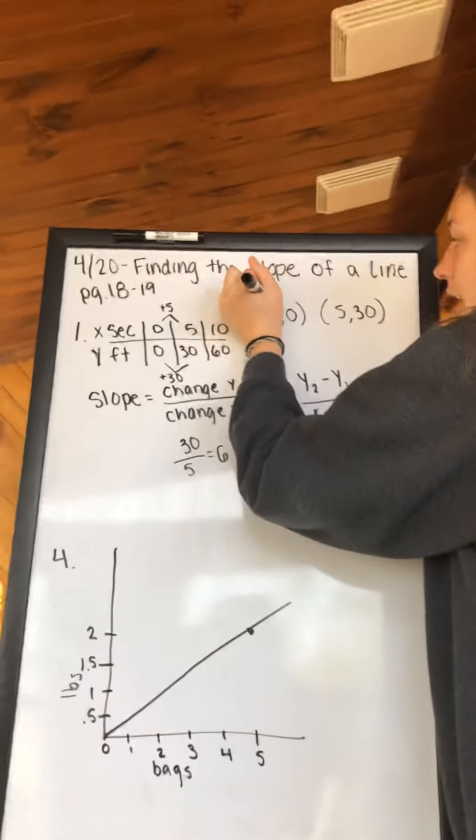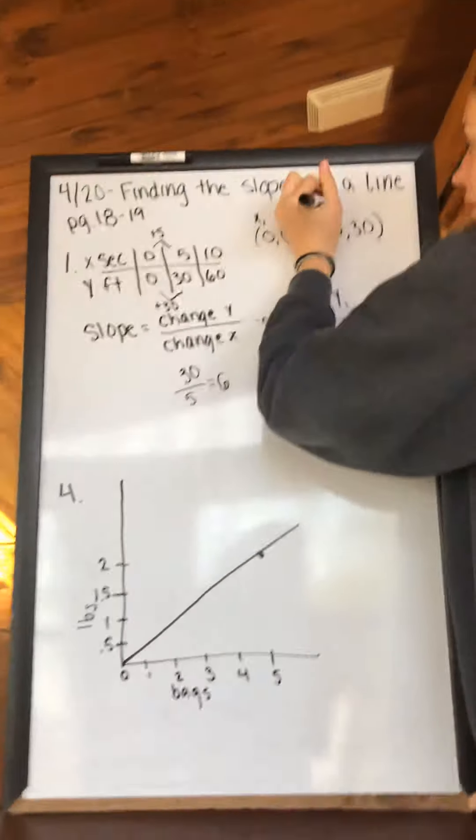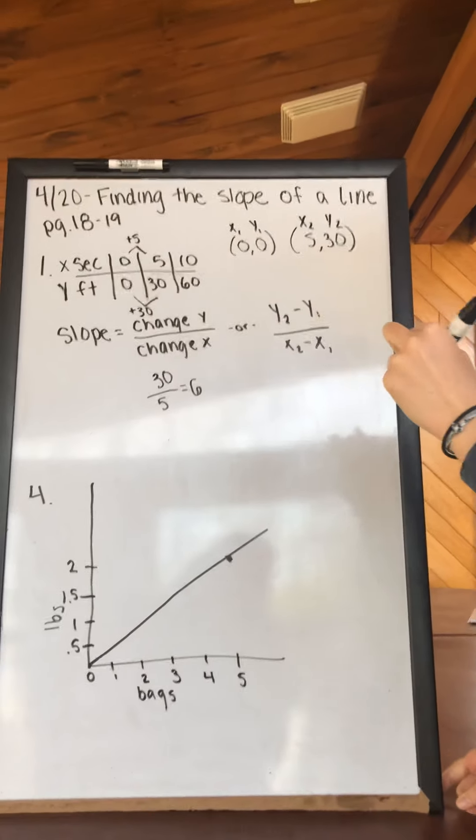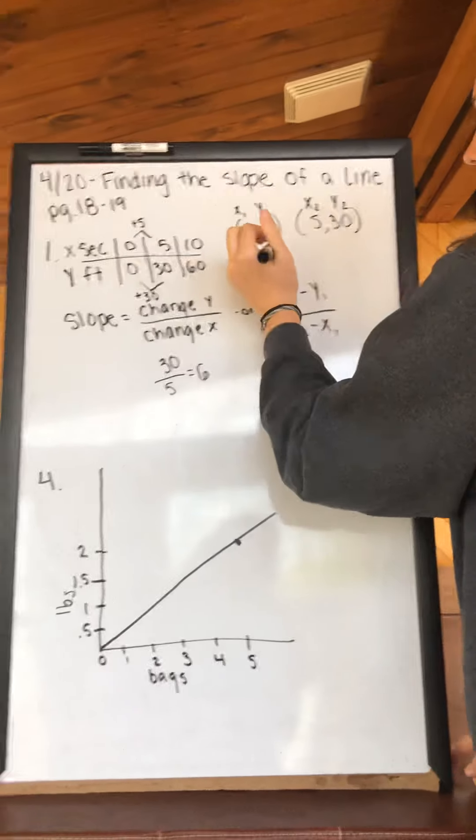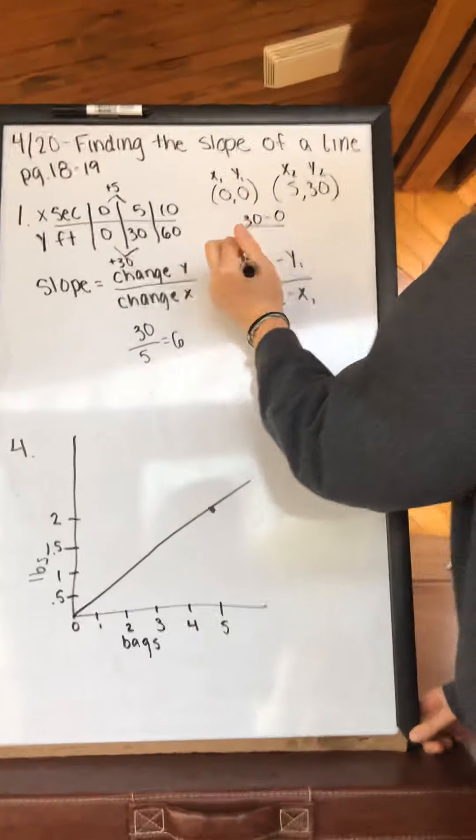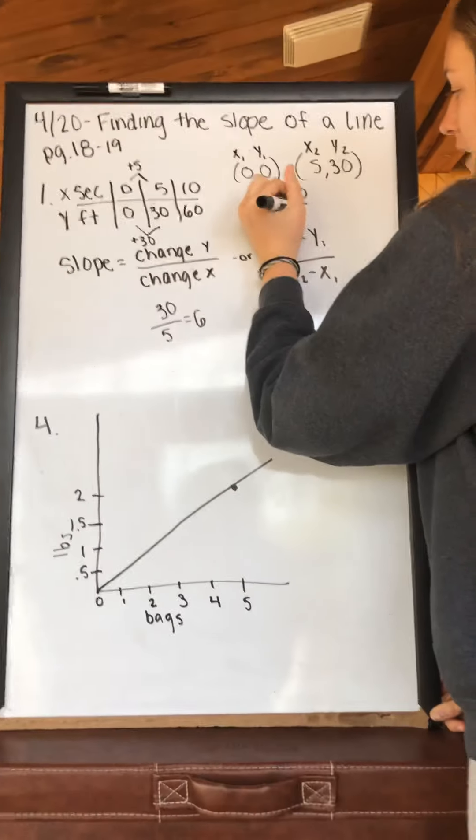Label your points x1, y1, x2, y2, and plug them into the formula. y2 minus y1: 30 minus 0, over x2 minus x1: 5 minus 0.